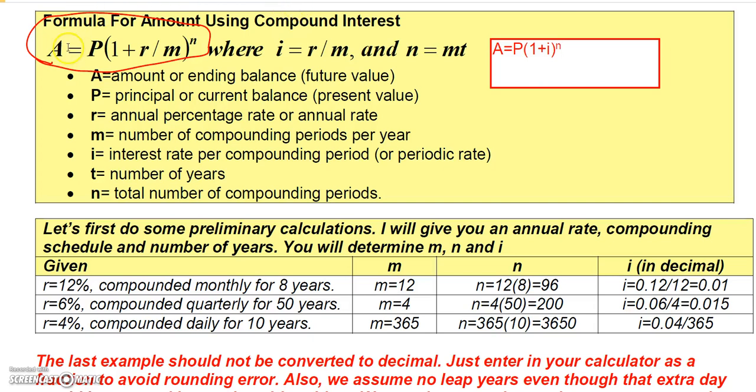We're going to move on now to working with this formula for the amount when you have compound interest. You can write this formula as P times the quantity 1 plus r over m raised to the n, where i is r over m.